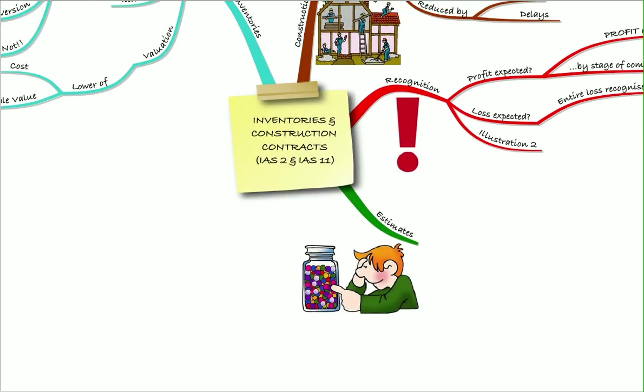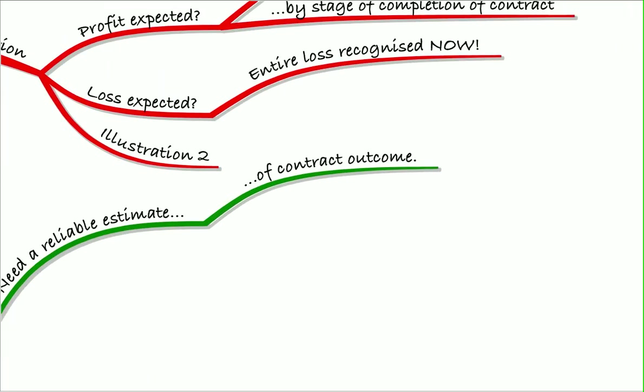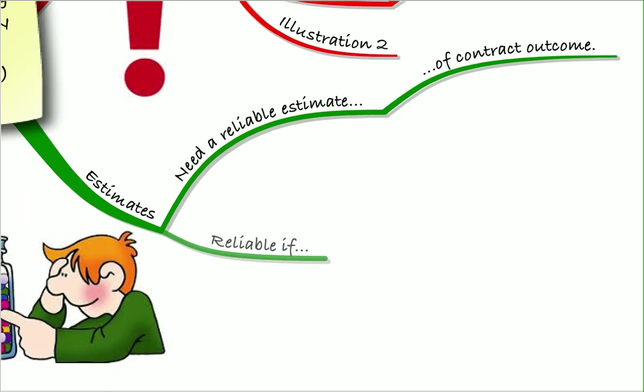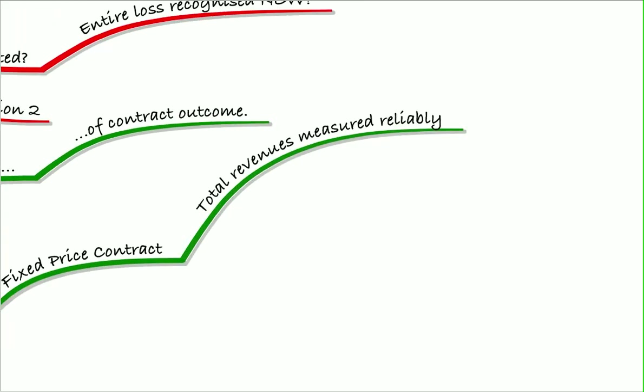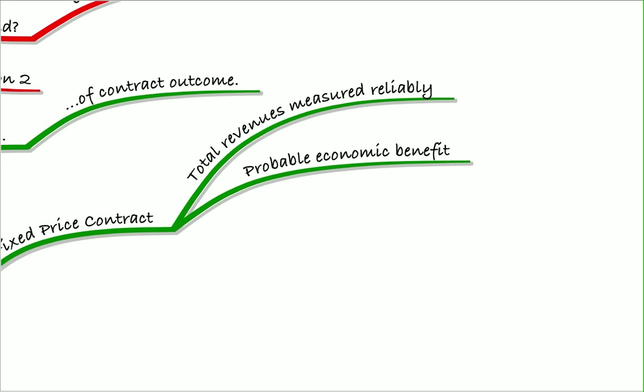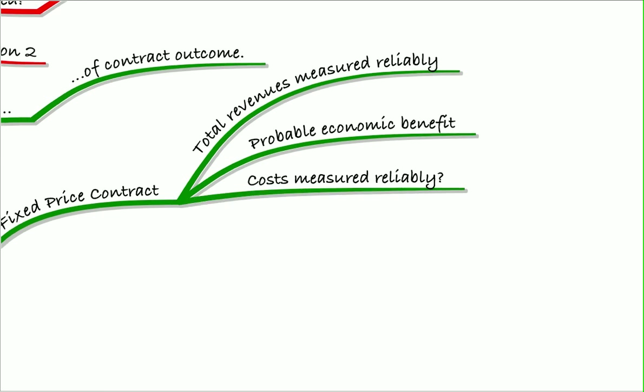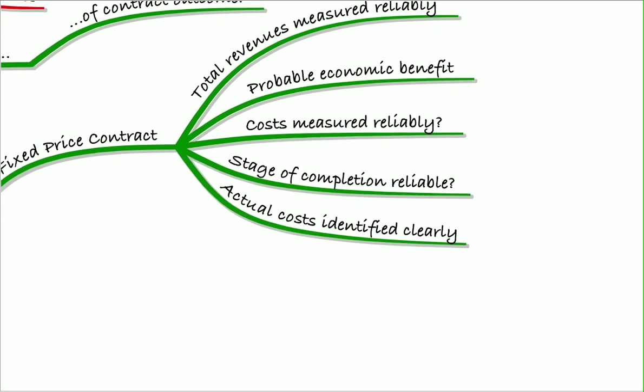Remember that IAS 11 is all based on estimates. So in order to estimate the outcome of the contract, we need to have a reliable estimate. And it will be reliable if on a fixed price contract, we have the total revenues measured reliably, probable economic benefit, the costs measured reliably, the stage of completion reliable, and the actual costs can be identified clearly on the contract.